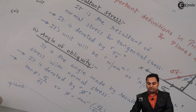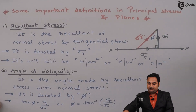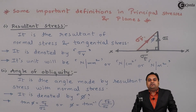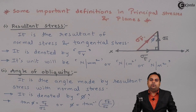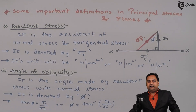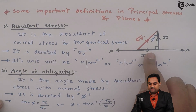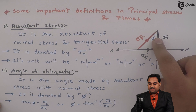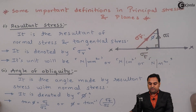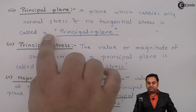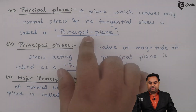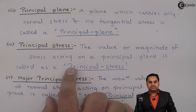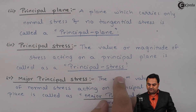In this video we have seen various important definitions used in principal stresses and planes. Understanding these definitions helps us identify what to find in problems. First, resultant stress — the resultant of normal and tangential stress. Then angle of obliquity — the angle made by resultant stress with the normal stress. Then principal plane — a plane which carries only normal stress and no tangential stress.